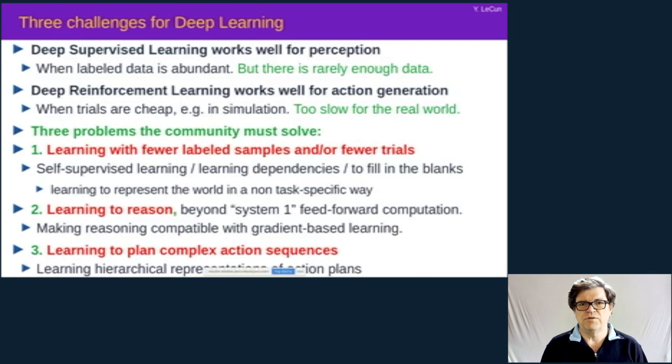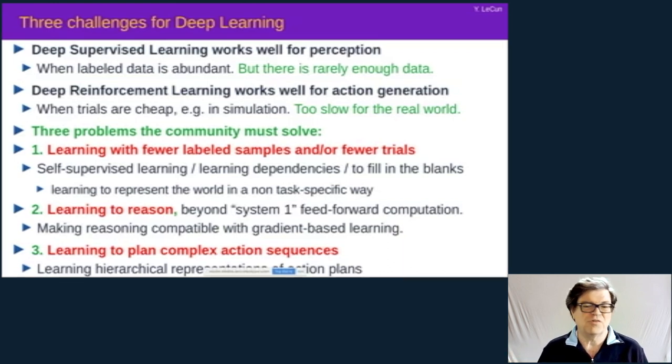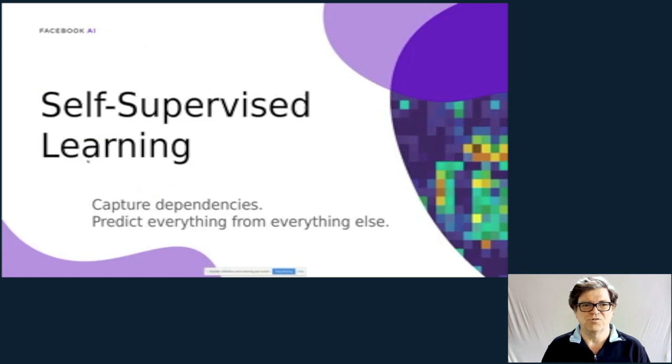The second one is learning to reason, going beyond system one, Daniel Kahneman's system one, which is not going through kind of a fixed number of steps in a feedforward neural net, but being able to sort of reason perhaps by finding a configuration of variables that satisfy a certain number of constraints, so minimize some sort of energy or maximize some likelihood. And the third one is learning to plan complex action sequences, and I don't have much to say about this unfortunately.